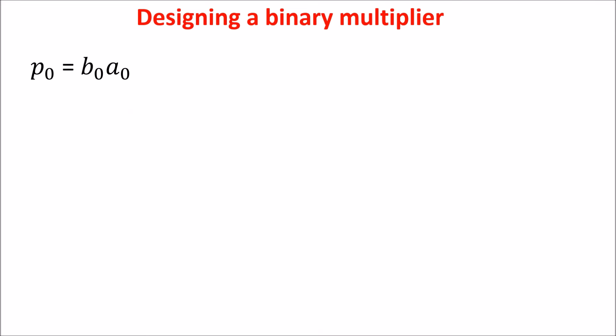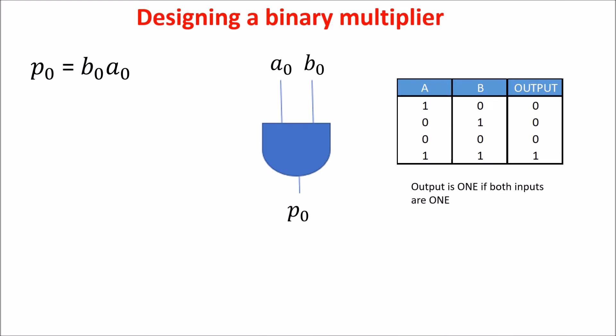So, let's start with the least significant bit of the product, P0, and let's build a circuit to obtain it. This is easy, because the product of 2 bits is obtained by putting them in AND. 1 times 1 is 1, and 0 times something is always 0.